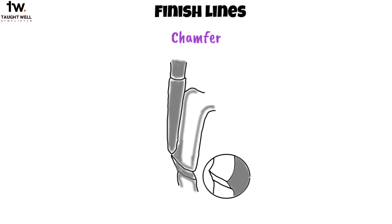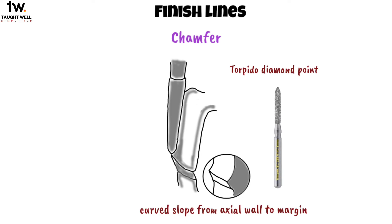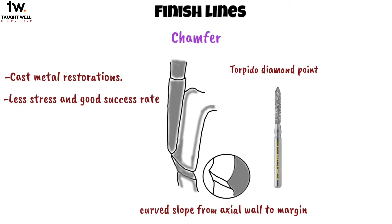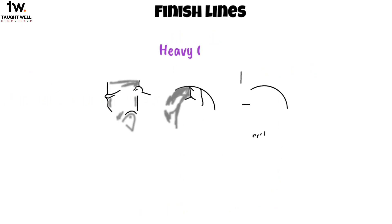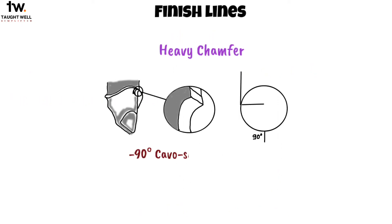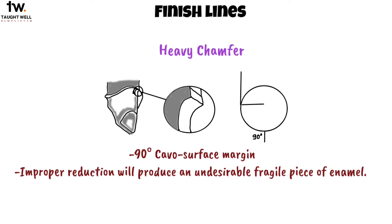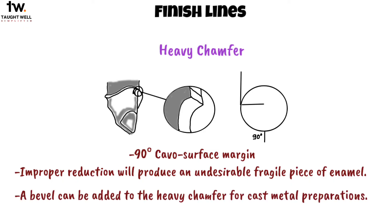The first is chamfer. This is made by a curved slope from the axial wall to the margin and is made by a torpedo diamond point. This finish line is used for cast metal restorations. They have less stress and a good success rate. Heavy chamfer is used to provide a 90 degree occlusal surface margin. Improper reduction will produce an undesirable fragile piece of enamel. A bevel can be added to the heavy chamfer for cast metal preparations.